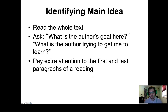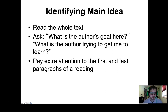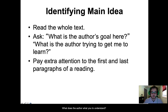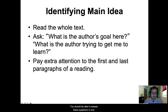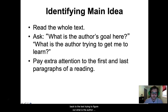Identifying the main idea: the first step is to read the entire text — whether it's an assignment, a chapter in your textbook, a book for a literature class, a sociology report, or a chemistry lab report. Read the entire thing. Then ask yourself: what is the author's goal here? What is the author trying to get me to learn? You should be able to answer these questions in one sentence. If you are unable to, you need to return to the text and figure out what the author is trying to say to you as the reader.